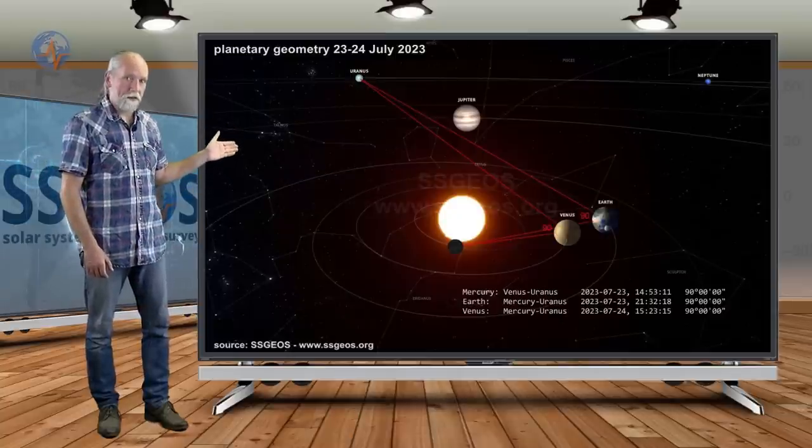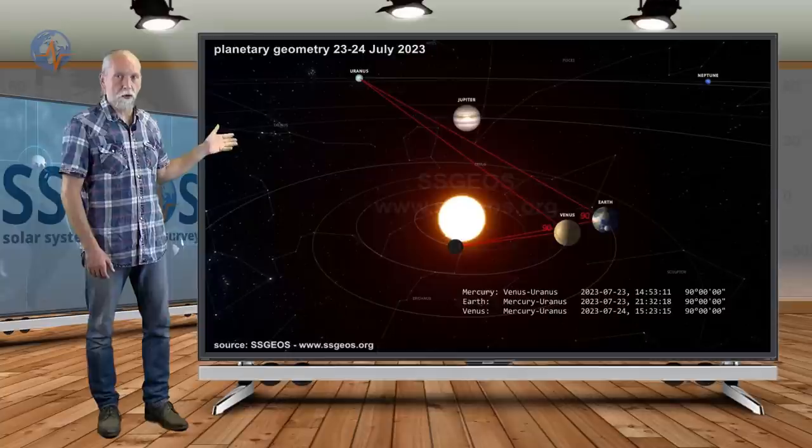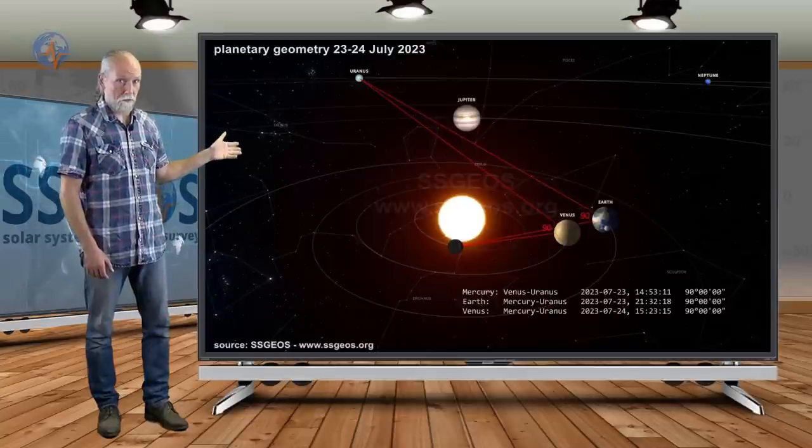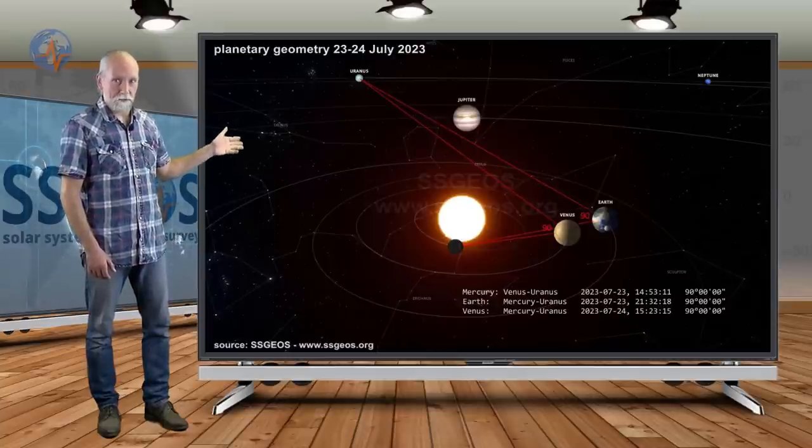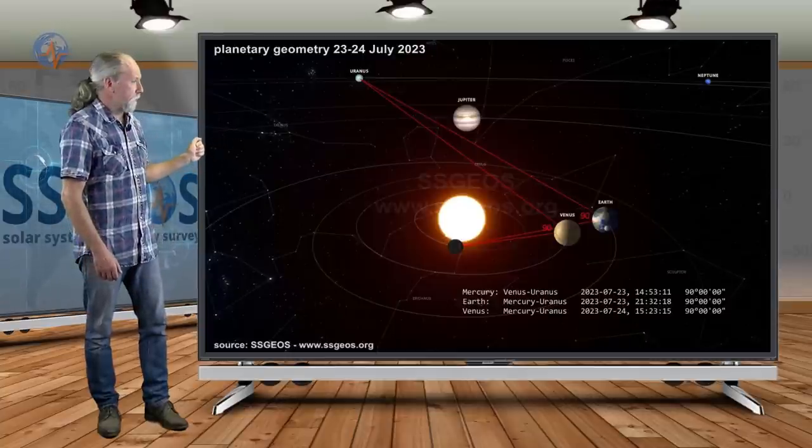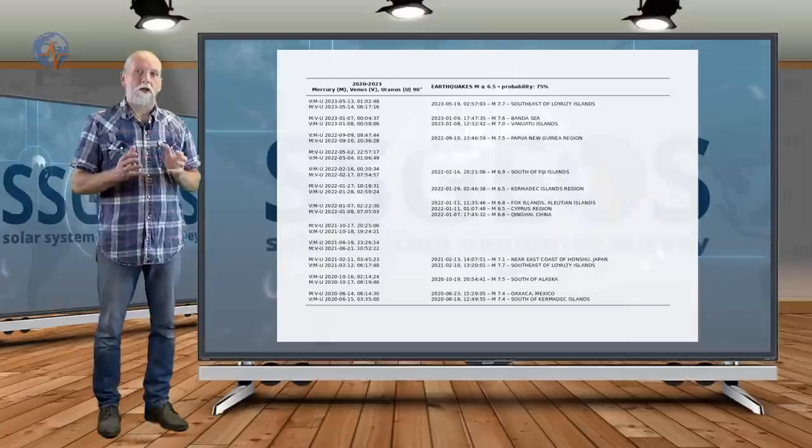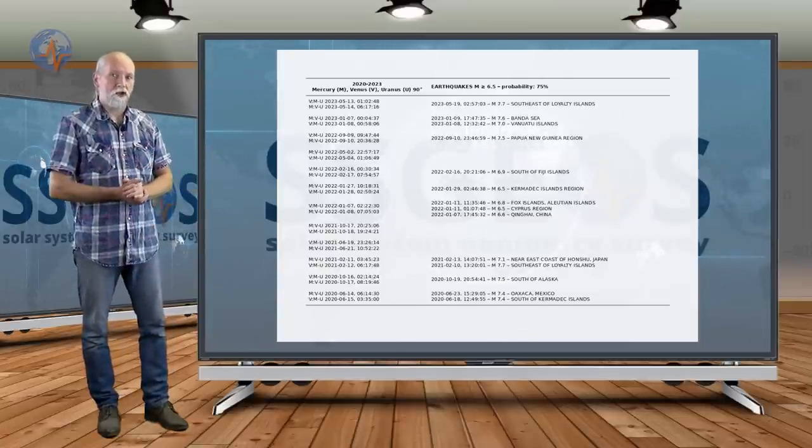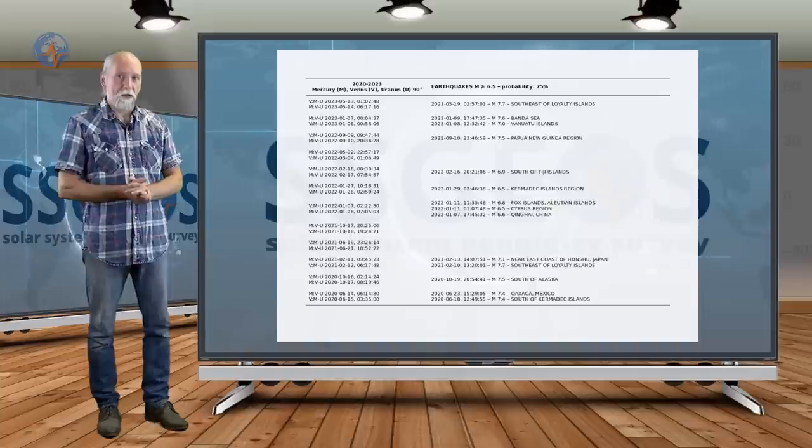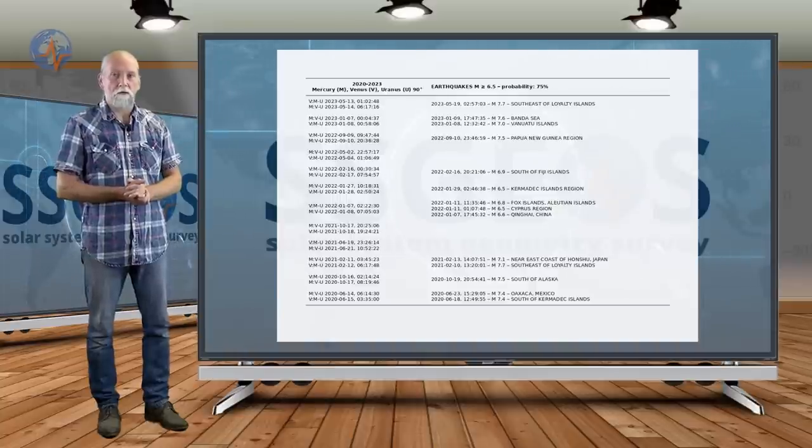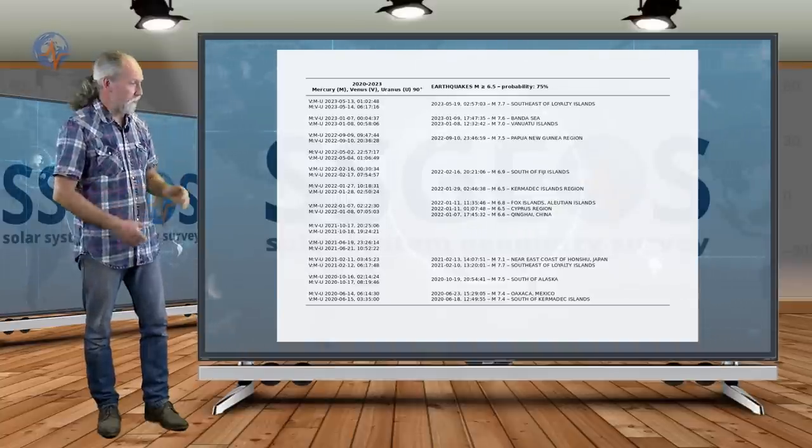They occur in pairs, and the last three times that this geometry occurred we had mid-7 magnitude earthquakes in May, January, and September last year. So let's have a look at a table that I prepared to see how much of this planetary geometry occurred over the last three years and how often it resulted in major seismic activity.